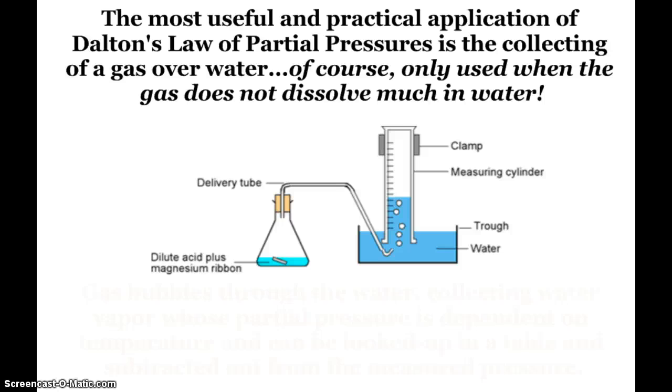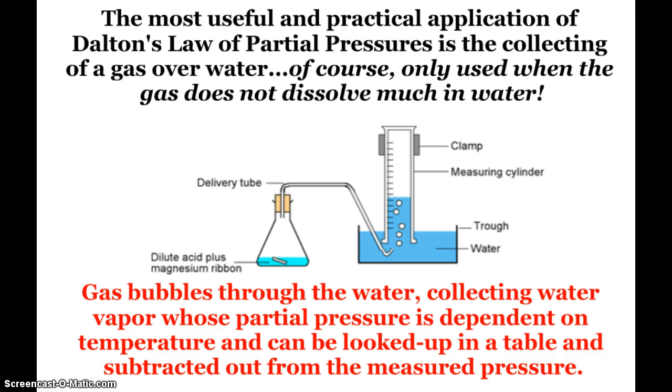Now, the most useful and practical application of Dalton's Law is when we collect gas over water. Okay, and this happens quite often in the lab. But, of course, we don't collect gases that dissolve very rapidly in water, because otherwise we wouldn't be able to collect them that well. But we'll do this in lab. Basically, what's happening is you're going to create a gas, it bubbles through water, and it collects on top of the water. But as it goes through the water, it picks up some water vapor, and that partial pressure is dependent only on temperature. We can look it up on a table, and we can subtract it out from our measured pressure in the lab.